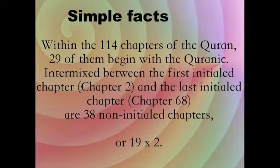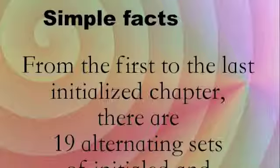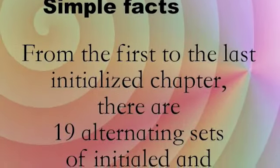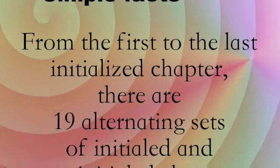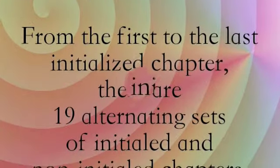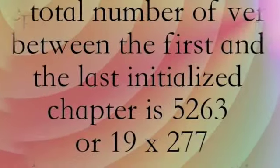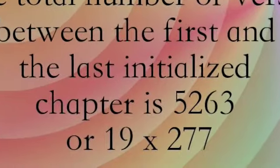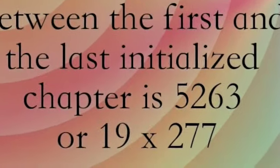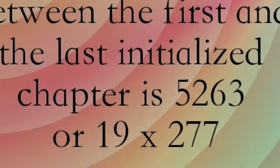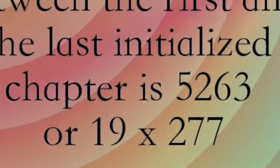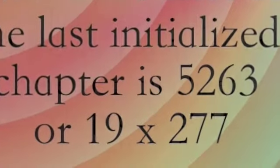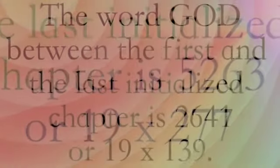Between the first initialized chapter and the last initialized chapter, there are 38 non-initialized chapters — that's 19 times 2. From the first to the last initialized chapter, there are 19 alternating sets of initialized and non-initialized chapters. The total number of verses between the first and the last initialized chapter is 5,263, or 19 times 277.